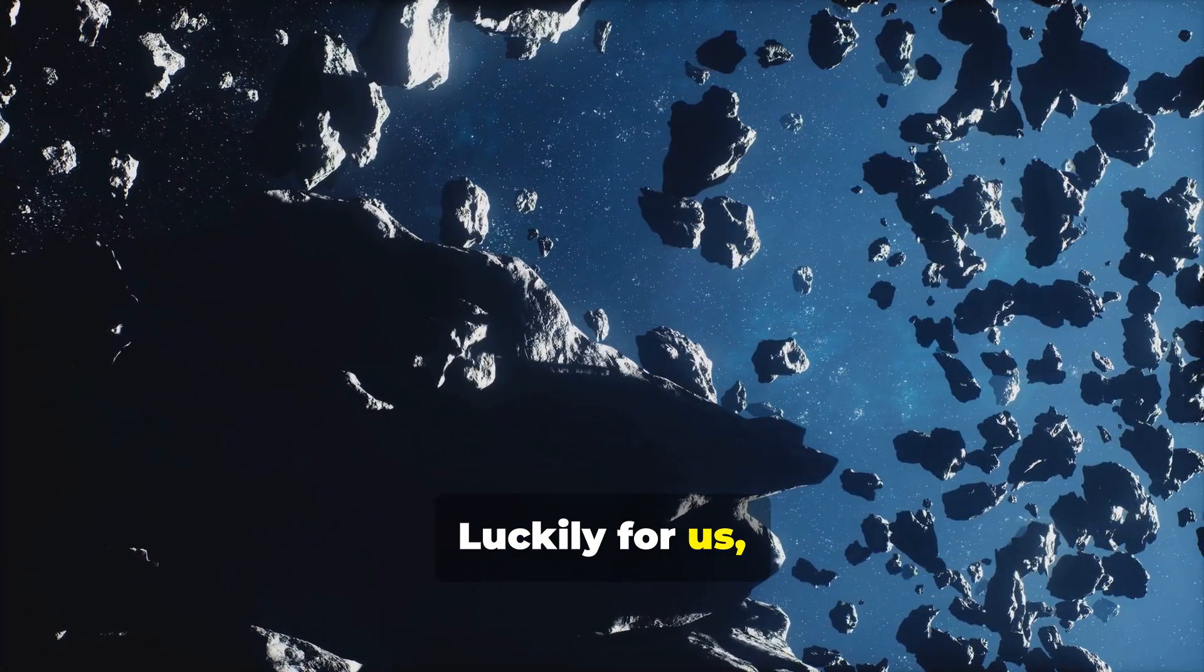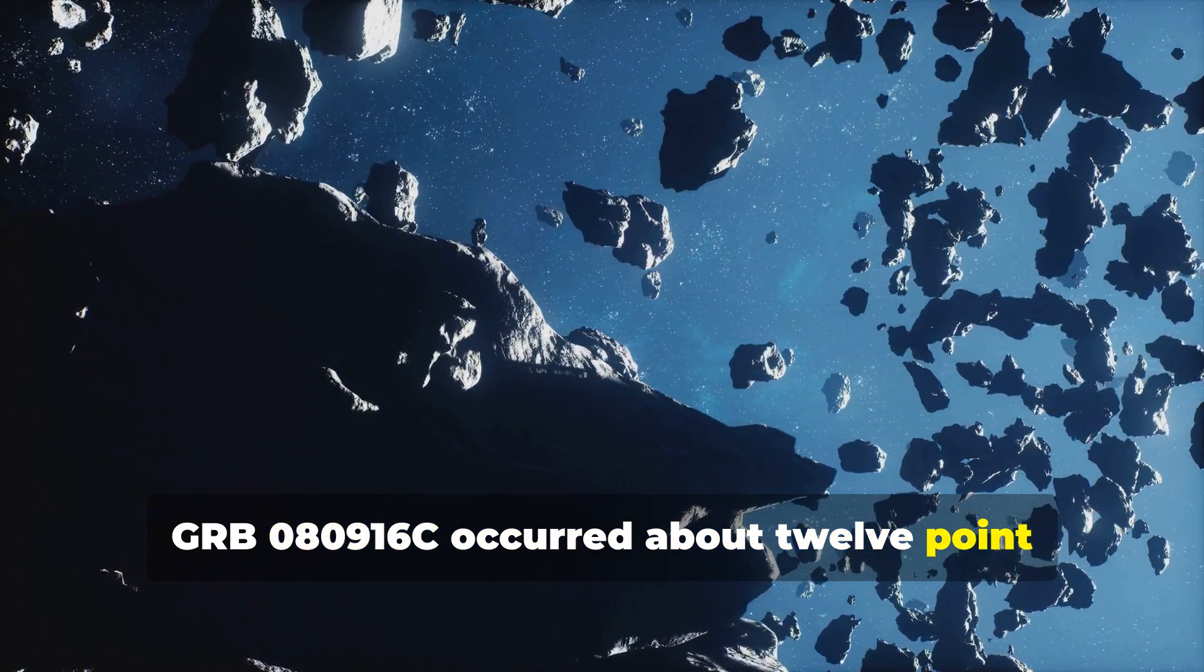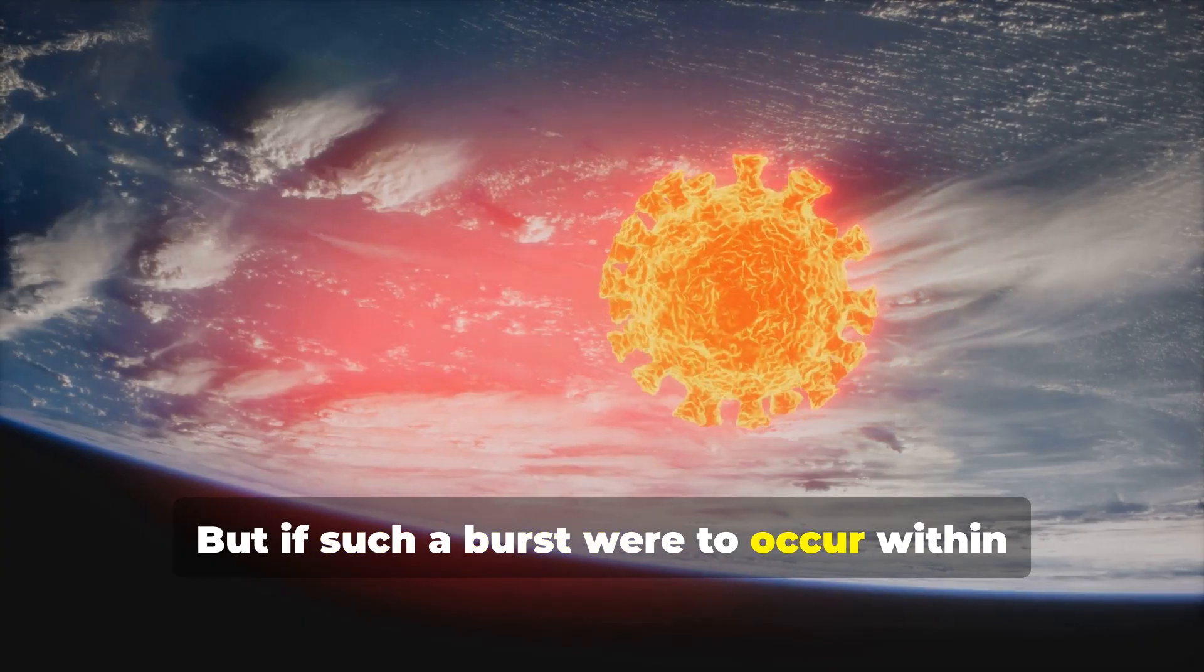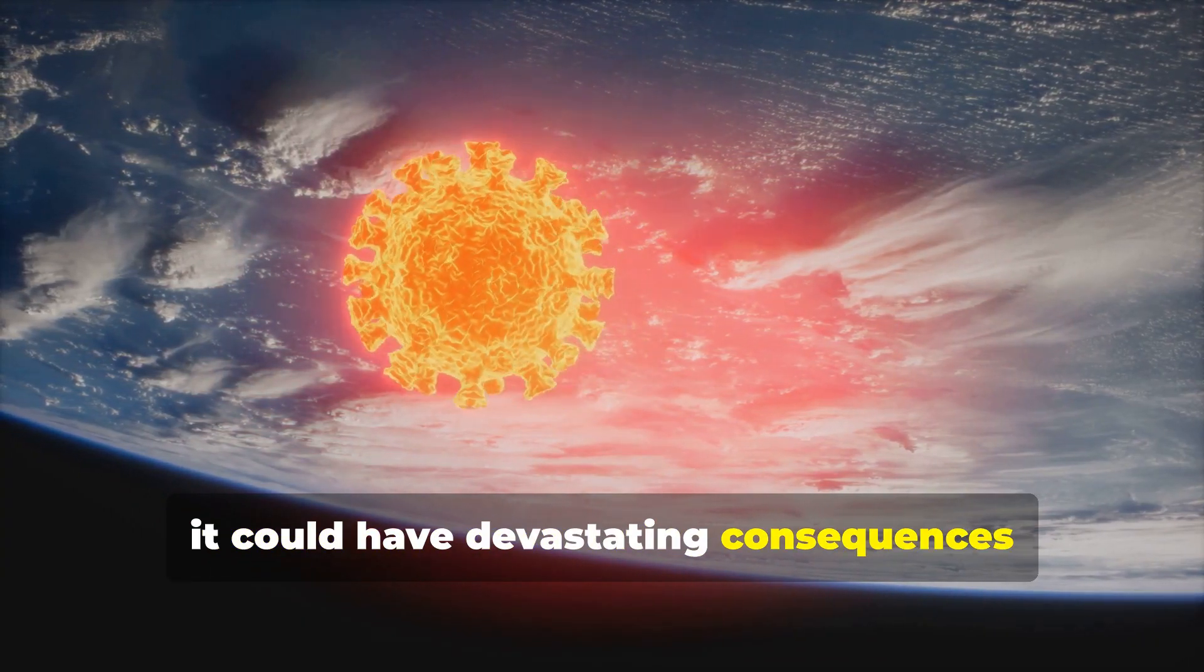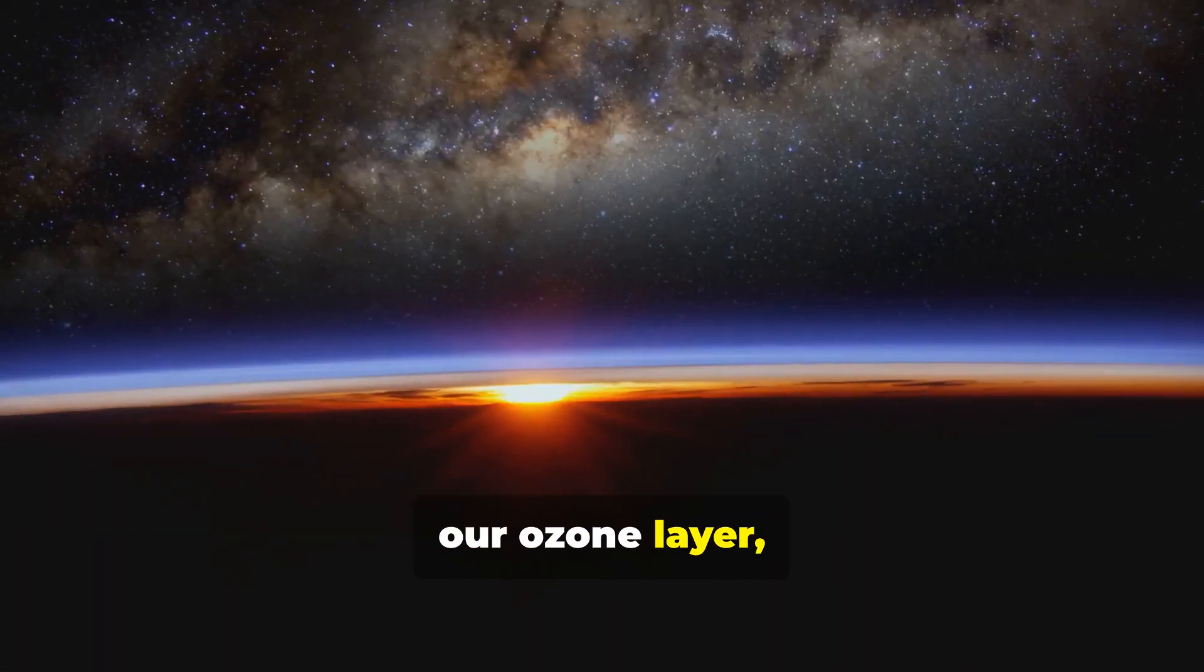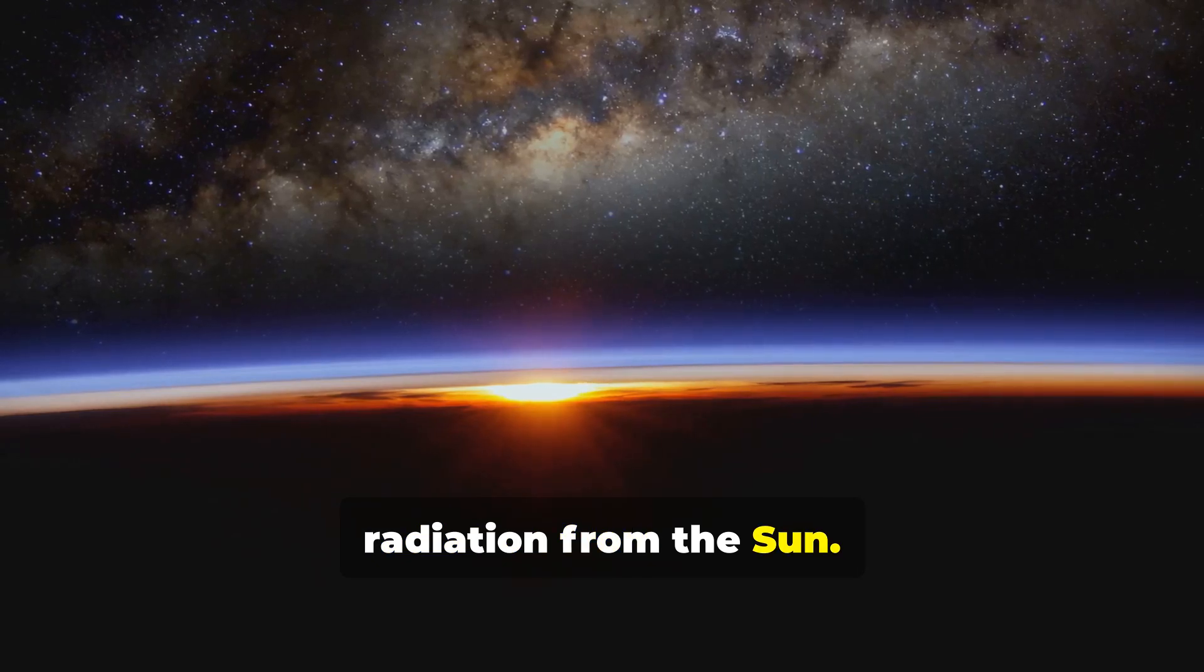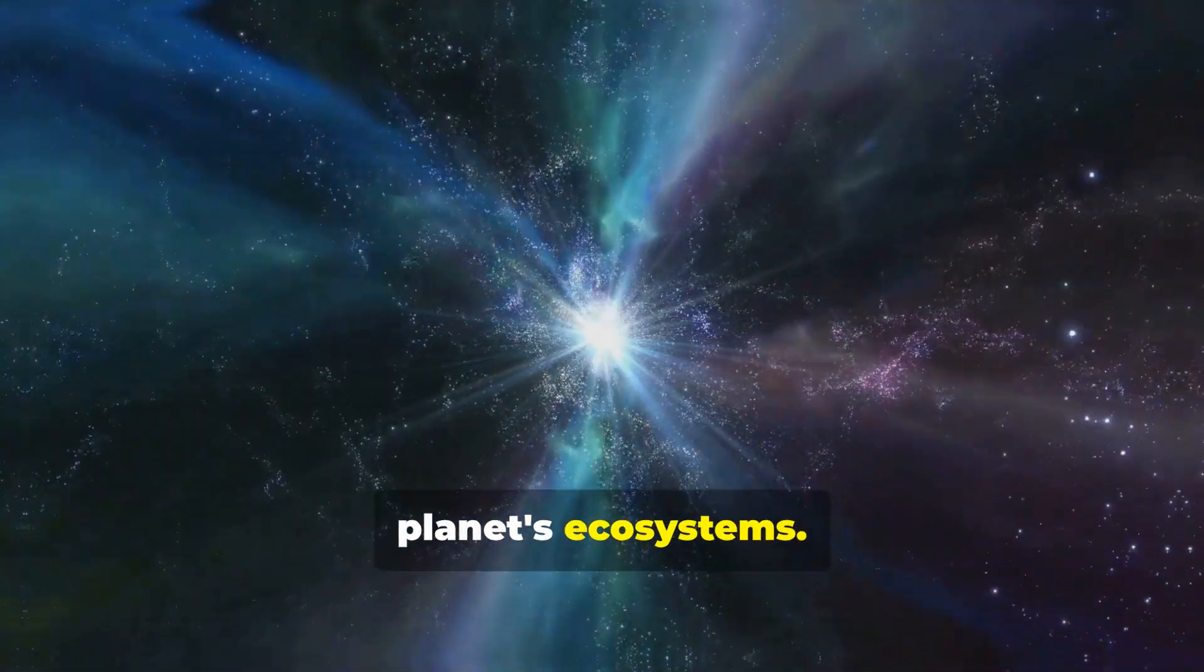Luckily for us, GRB 080916C occurred about 12.2 billion light years away, so we were never in any real danger. But if such a burst were to occur within a few thousand light years of Earth, it could have devastating consequences for our planet. The intense gamma rays would strip away our ozone layer, leaving us exposed to harmful ultraviolet radiation from the sun. This would lead to mass extinctions, disrupting the delicate balance of our planet's ecosystems.